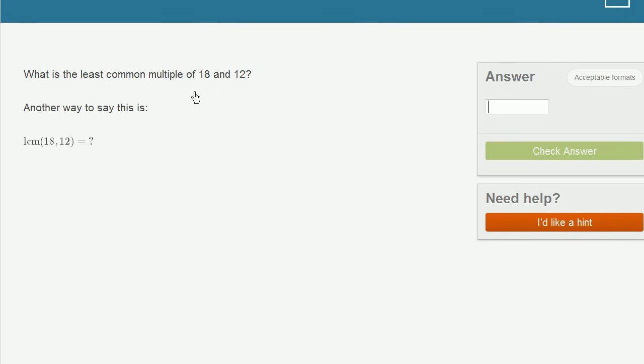What is the least common multiple of 18 and 12? And they just state this with a different notation. What's the least common multiple? Or the least common multiple of 18 and 12 is equal to question mark.